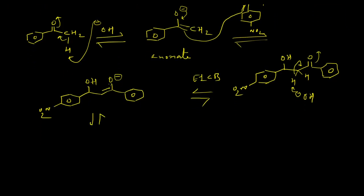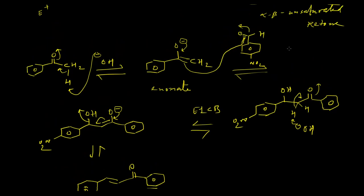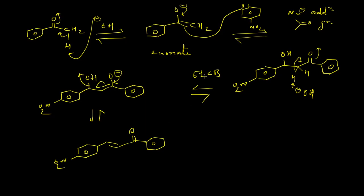In the next step, elimination of OH minus takes place, and this produces the alpha-beta unsaturated ketone, which is our product. To summarize: the first step is the nucleophilic addition to the carbonyl functional group, and the second step is the E1cb elimination reaction.